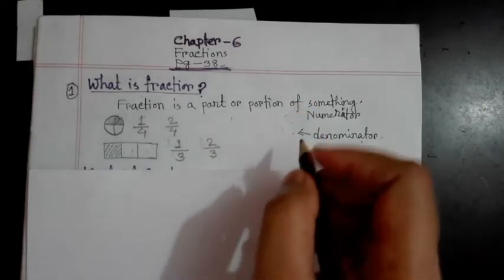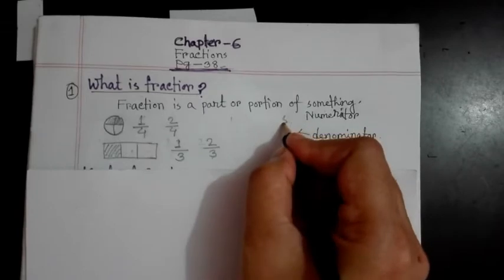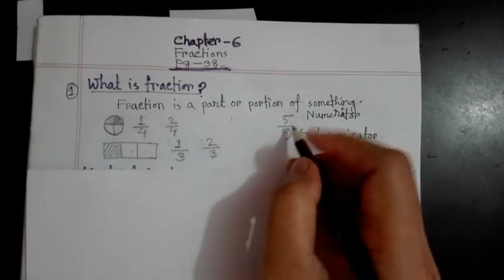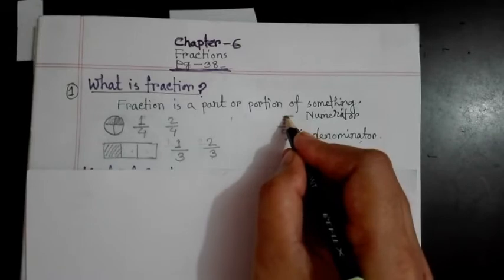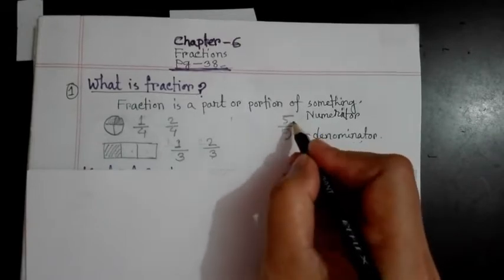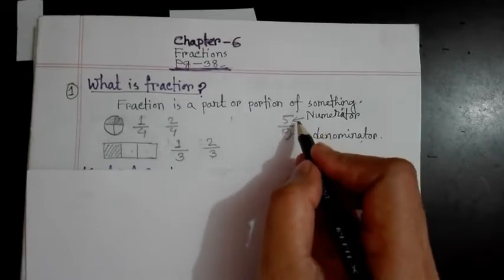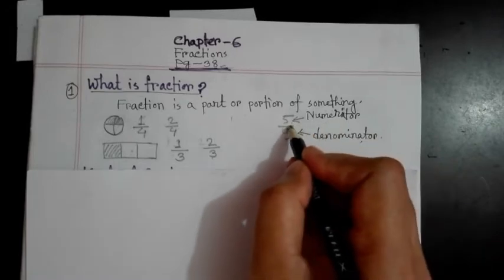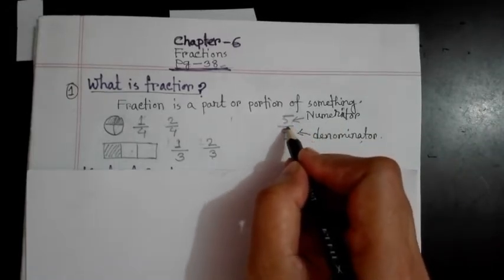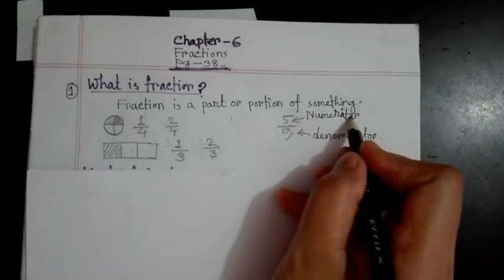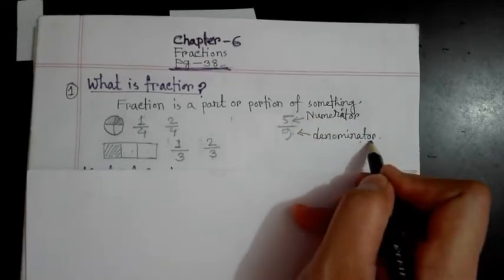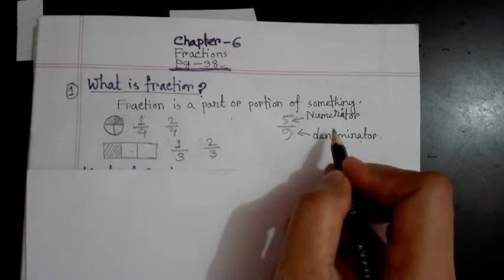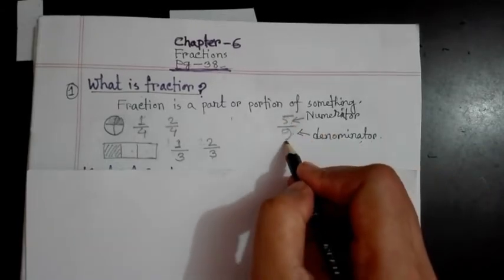Now one thing we have to know. I write here five by nine. This five has a name and this nine has a name. What is this five called? This five is called the numerator. The number which is above the division line is called the numerator, and the number which is below the line is called the denominator. Mind it — this is the numerator and this is the denominator.